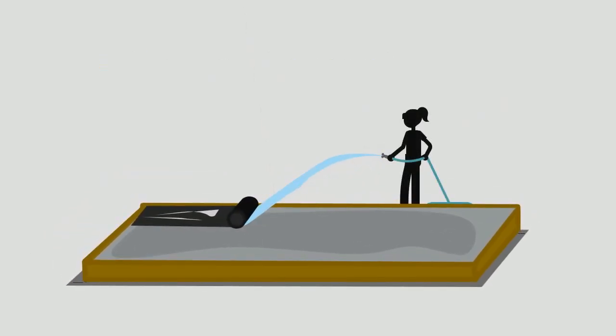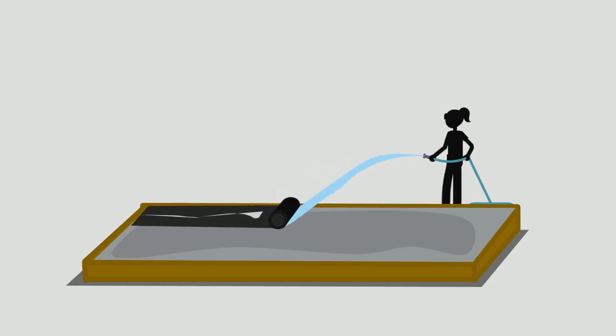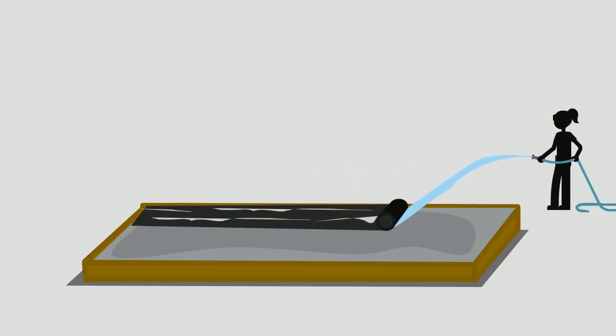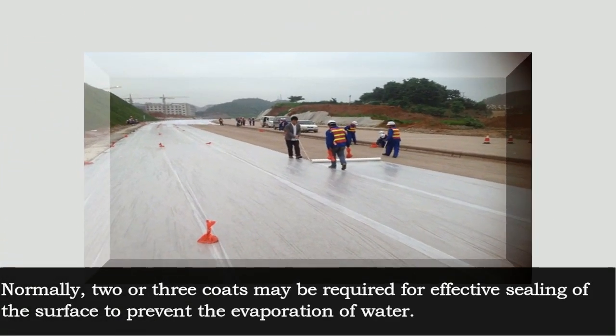To obtain best results, a small amount of water is sprayed before covering with the membrane. Normally, two or three coats may be required for effective sealing of the surface to prevent the evaporation of water.